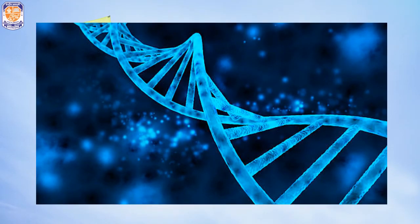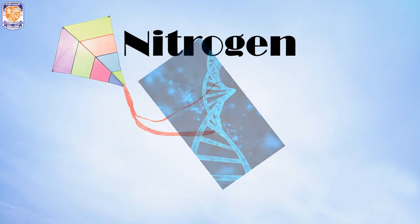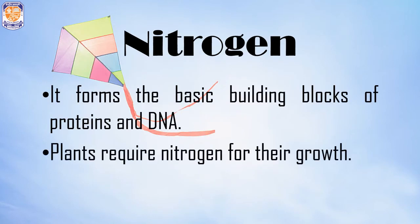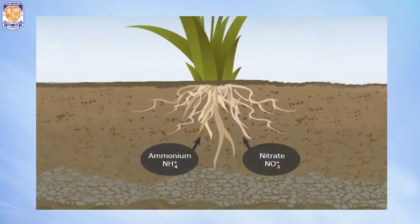Nitrogen is the building block of the proteins and DNA present in all living organisms. Plants require nitrogen for their growth, but plants cannot breathe in nitrogen directly from the air. Instead, they absorb it through their roots from the soil in the form of ammonia and nitrate. Ammonia is part of fertilizers used to feed plants for their proper growth.